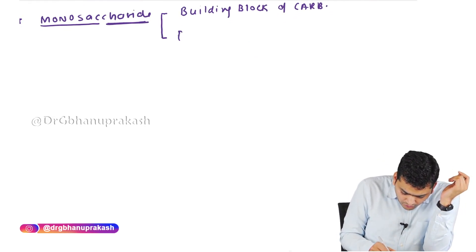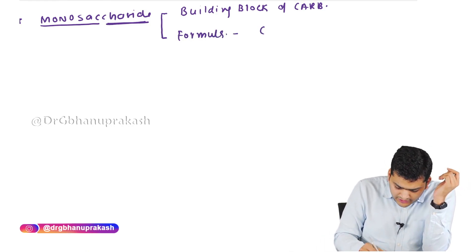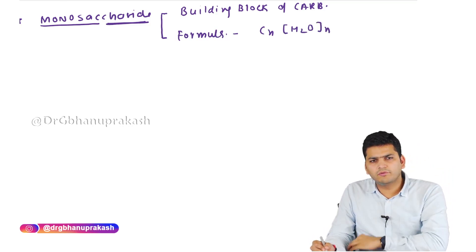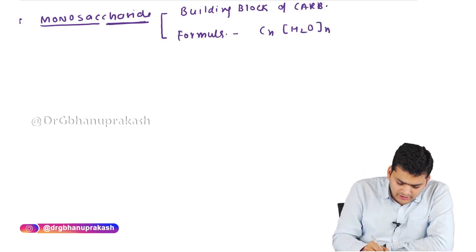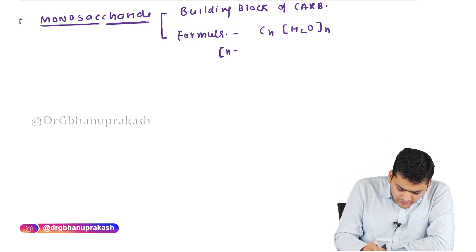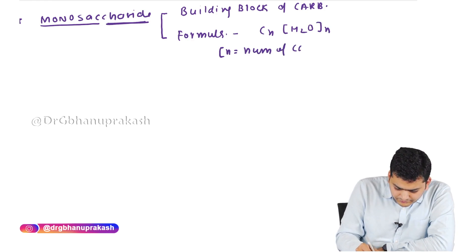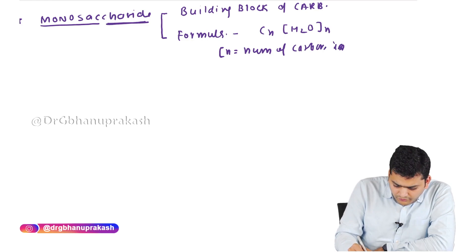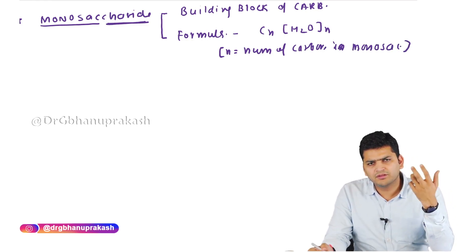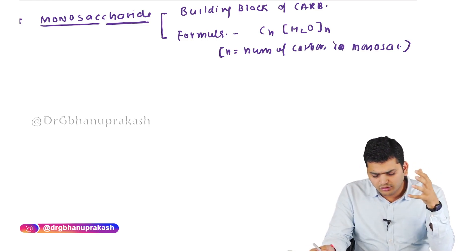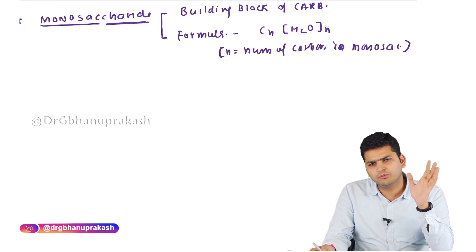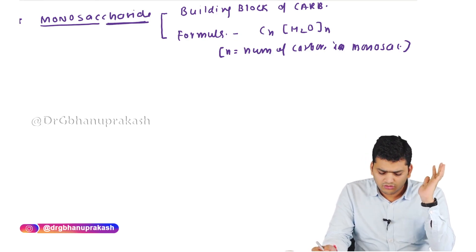When it comes to the formula, there is a universal formula for monosaccharide: CnH2On, where N is the number of carbons. For example, glucose is a six-carbon molecule so N equals six, giving the formula C6H12O6.